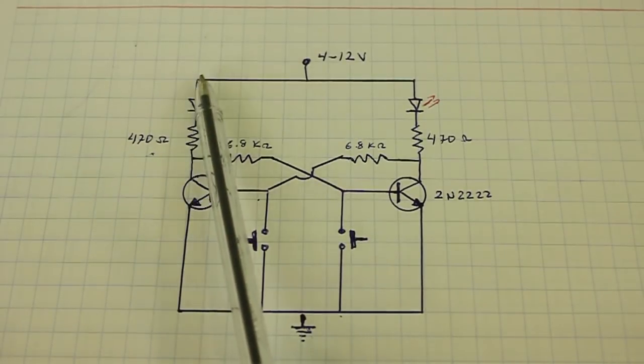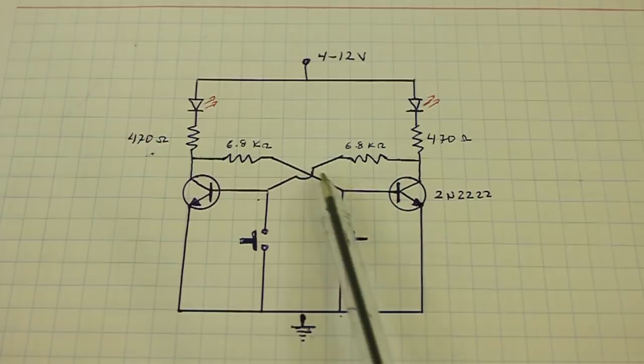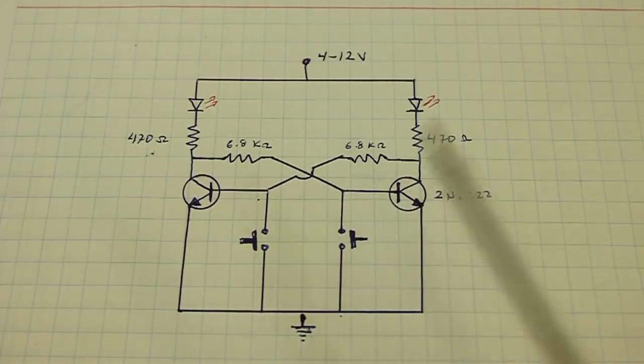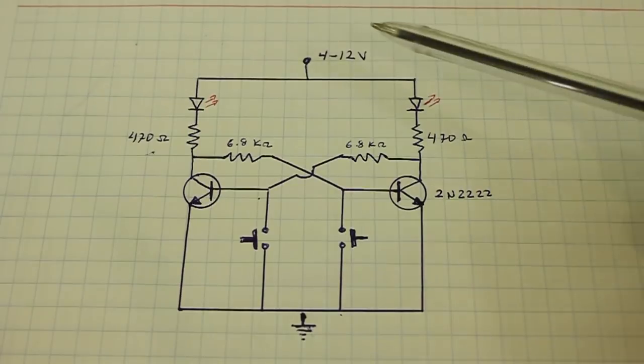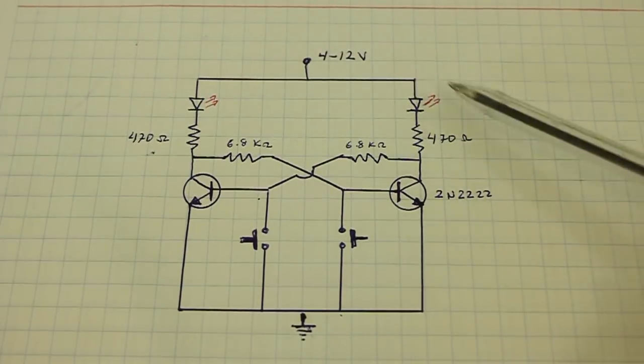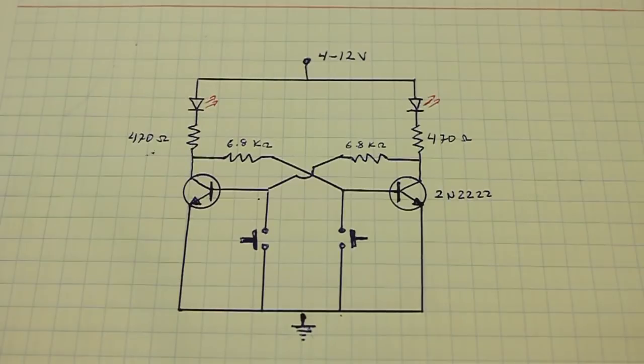But now it can flow to the base of the other transistor and this transistor is now on. Now the current can flow through this path and the other LED is turned on.